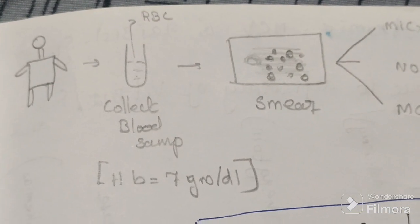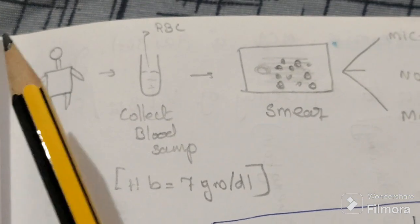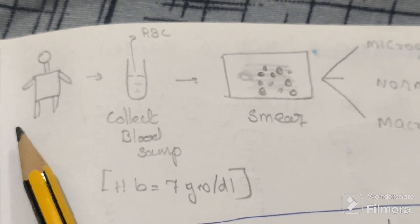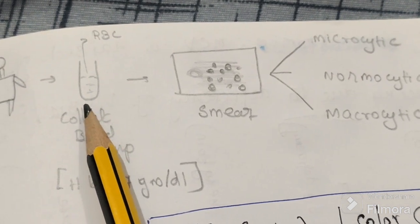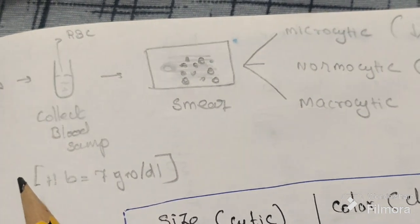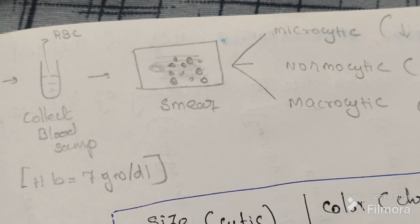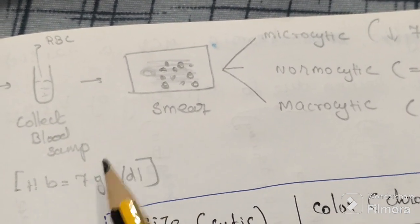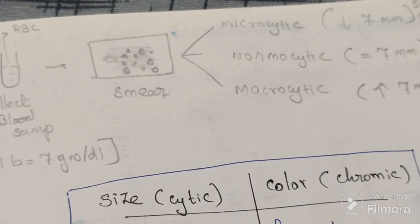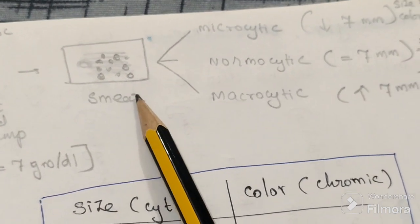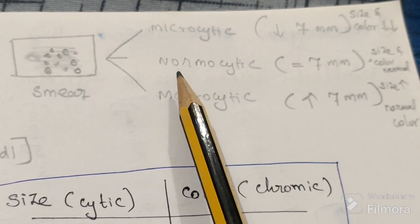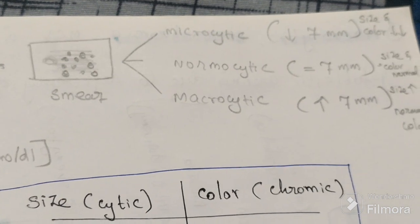How to identify the type of anemia? For example, if a patient has symptoms like lethargy, fatigue, weakness, we want to identify the complete blood count. If hemoglobin is below 7 grams per deciliter — we already know the normal ranges for male, female, and newborn — we then do a blood smear. On the blood smear we identify cells of three different sizes and colors, confirming the person has anemia.